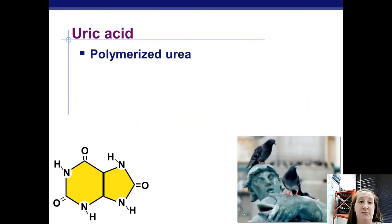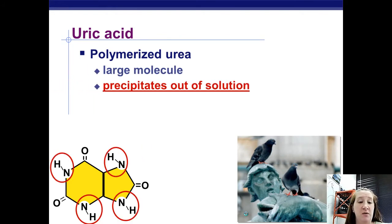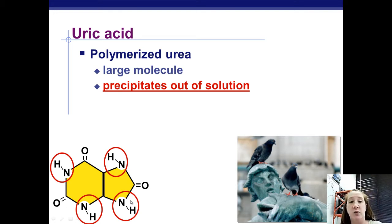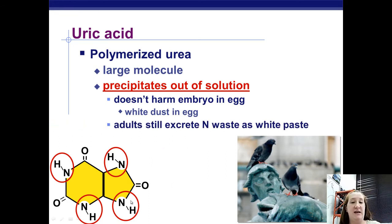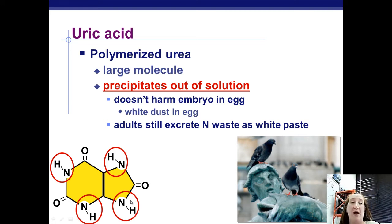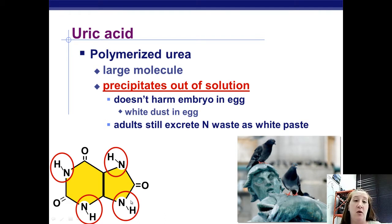It's birds, reptiles, and insects that produce uric acid. It's a big molecule that can store a lot of nitrogen, and it precipitates out of solution so it won't harm the embryo — it makes a white dust on the inside of the egg. Adult birds still create nitrogenous waste as a white paste. The white paste we call bird poop is actually mostly bird pee in a more solid form, because uric acid is solid.